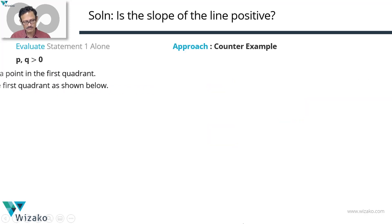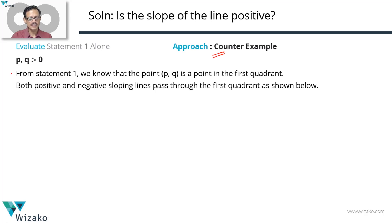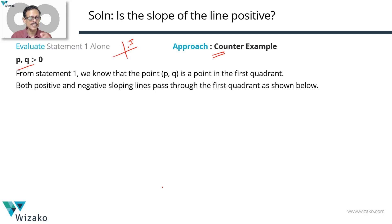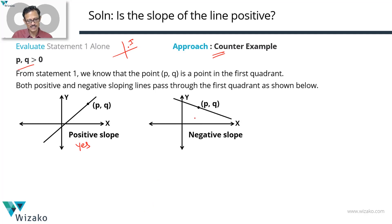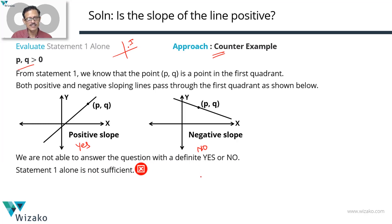Let's start with statement one. The approach I'm going to take is one of counter-example. Statement one says P, Q are greater than zero — both P and Q are positive. If both P and Q are positive, then obviously this point is a first quadrant point, where both X and Y are positive. All the information we have is about only one point on the line. Can we have positive sloping lines passing through a point in the first quadrant? Yes. Can we draw a negative sloping line passing through a point in the first quadrant? Certainly yes. So sometimes yes, sometimes no — we don't have a conclusive answer. Statement one alone is not sufficient.